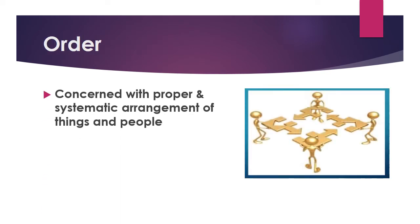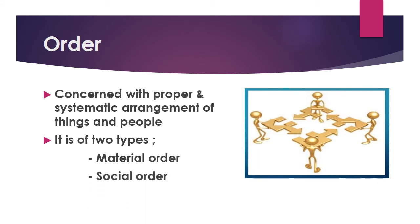The next principle is Order. Order is concerned with the proper and systematic arrangement of things and people. There are two types: material order and social order. Material order means there should be a safe and specific place for every article. Social order means the selection and appointment of the most suitable person for the suitable job — a specific place for everyone and everyone in their specific place, so they can be contacted whenever needed.